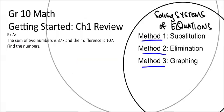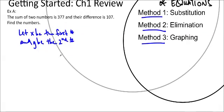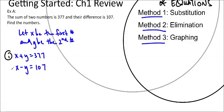The first thing I'm going to do is define my variables. Let x be the first number and y be our second number. We'll now write our equations: the sum is 377, so x plus y equals 377, and the difference is 107, so x minus y equals 107. This method is substitution.